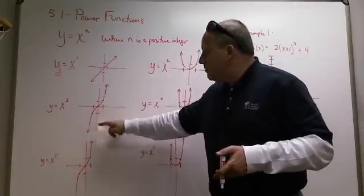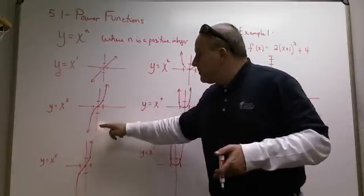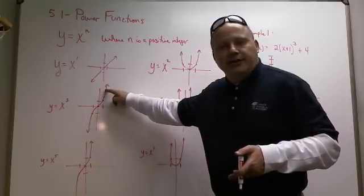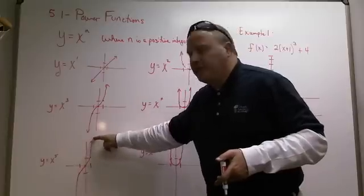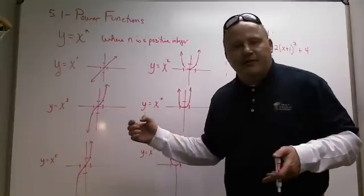This one right here has a 1, 1, but so does this one. But that's where it ends, and that's where it begins. Because you put a 2 in here, you'll get 8. 2 to the 3rd, you get 8. You put 2 in here, you get like 32.